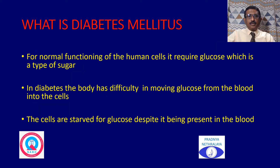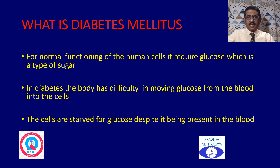So, what is diabetes mellitus? For normal functioning of the human cell, it requires glucose, which is a form of sugar. In diabetes, the body has difficulty in moving glucose from the blood into the cells. The cells are starved of glucose despite it being present in the blood.